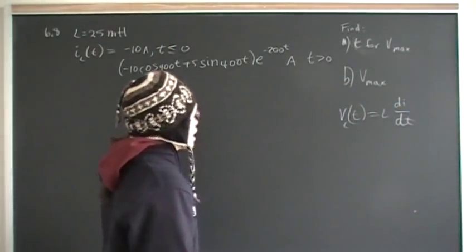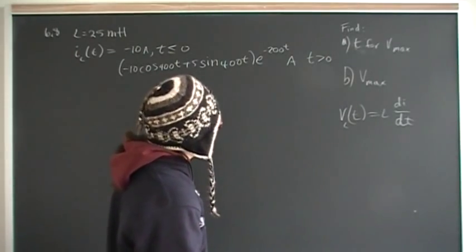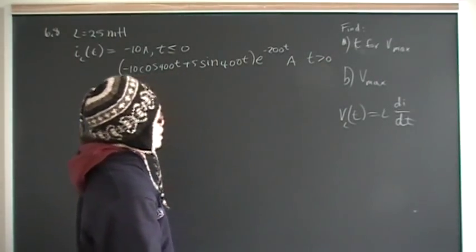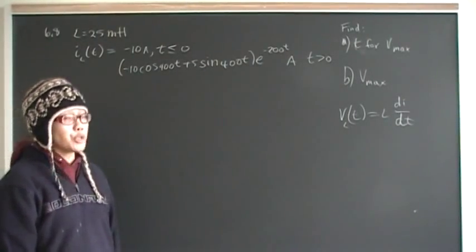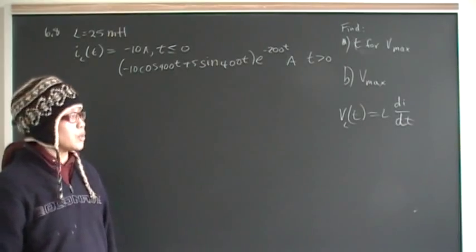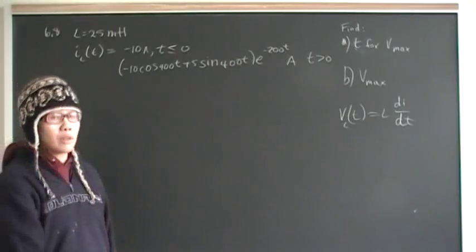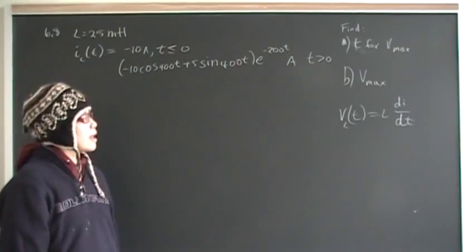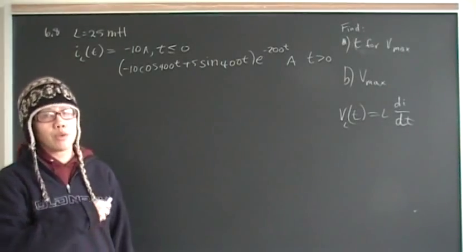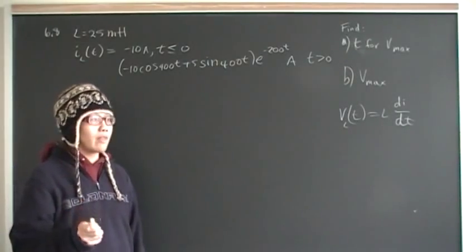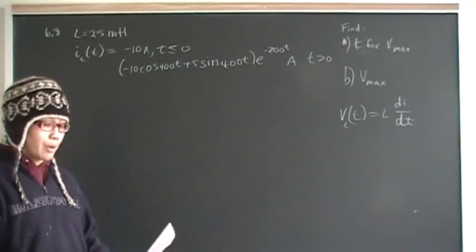Our strategy is going to be to find that formula, because to find a maximum voltage, we're going to have to use the first derivative and set it equal to zero. Once we do that, we can figure out what that time is, and then in part B we simply plug that time back into the voltage function found in part A. At this point you should pause the video and try all those steps and see if you can come up with the right answer.